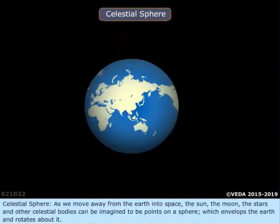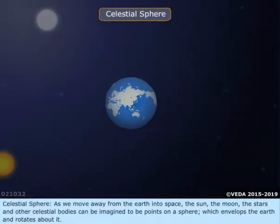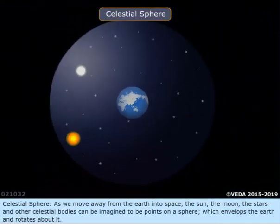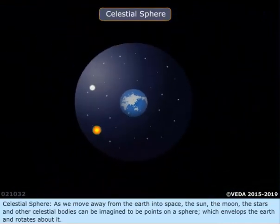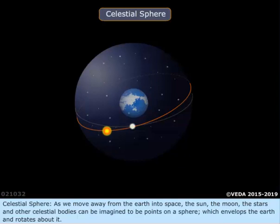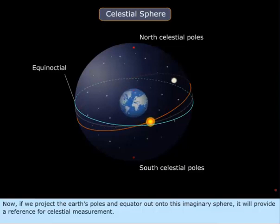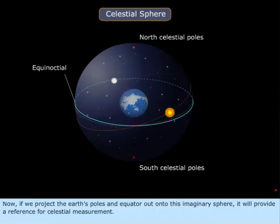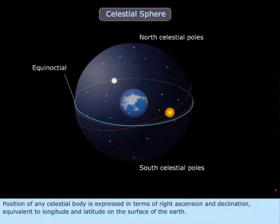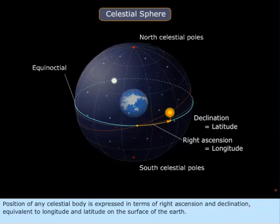Celestial Sphere. As we move away from the Earth into space, the Sun, the Moon, the stars, and other celestial bodies can be imagined to be points on a sphere which envelops the Earth and rotates about it. If we project the Earth's poles and equator out onto this imaginary sphere, it will provide a reference for celestial measurement. The position of any celestial body is expressed in terms of right ascension and declination – equivalent to longitude and latitude on the surface of the Earth.